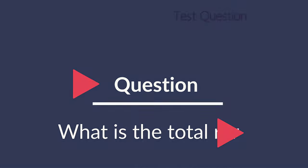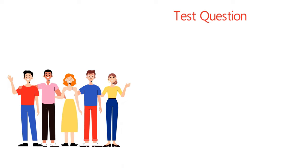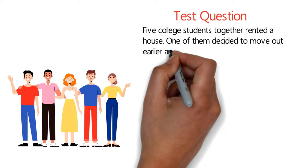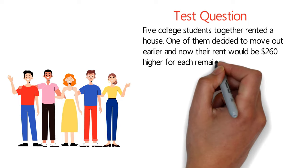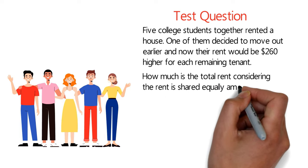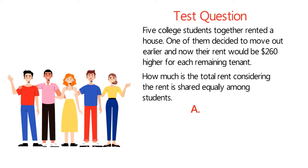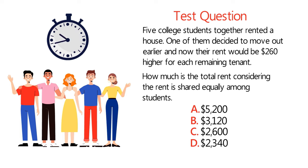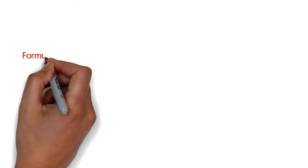Here's an interesting question about renting. Five college students rented a house together. One decided to move out, making the rent $260 higher for each remaining tenant. What is the total rent, assuming it is shared equally? Choices: A: $5,200, B: $3,120, C: $2,600, D: $2,340. Give yourself 20 to 30 seconds.